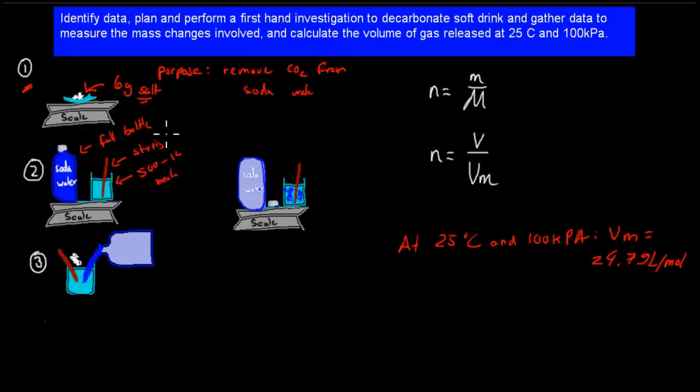So far we've just weighed salt, we weighed out 6 grams of salt, and we weighed out a stirring rod, a full bottle of soda water or a soft drink, and a 500 ml beaker. And we noted all that down, so we note all those masses down.